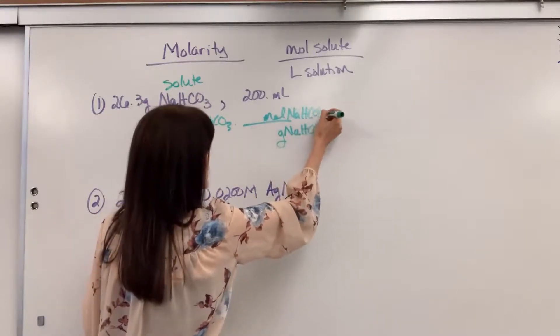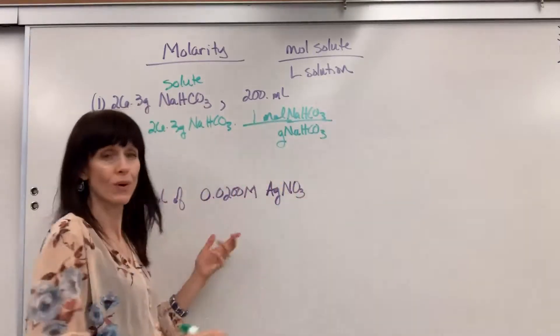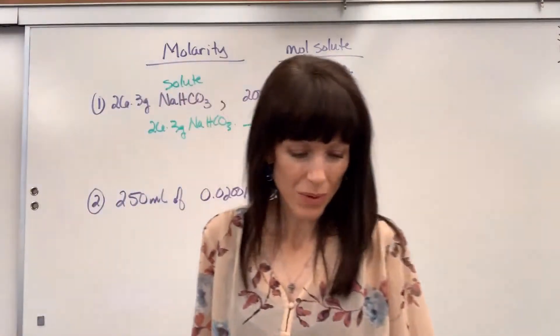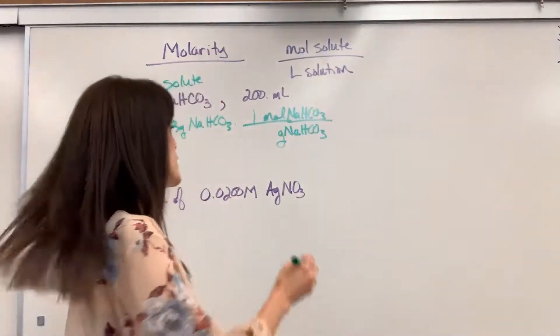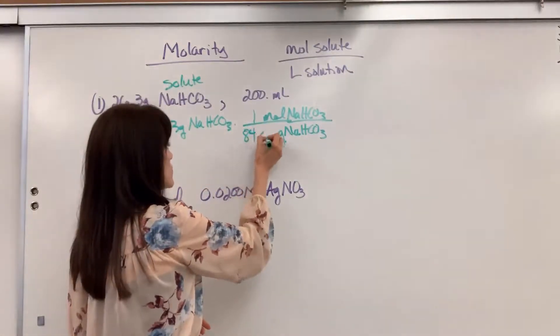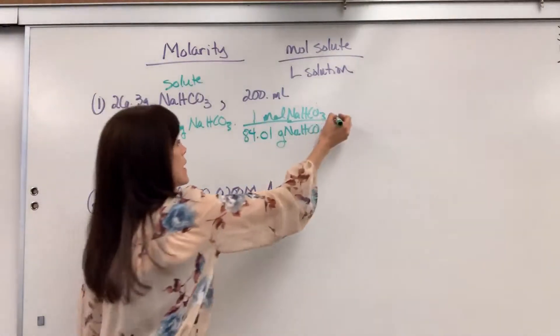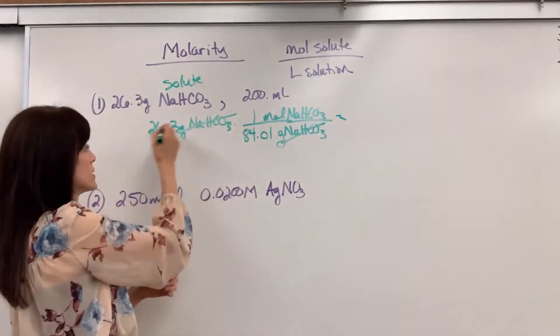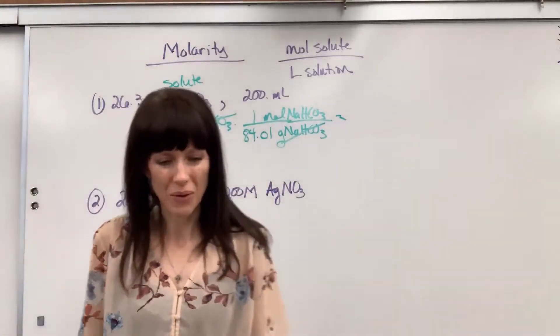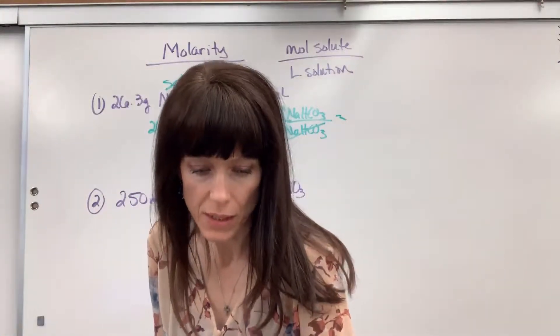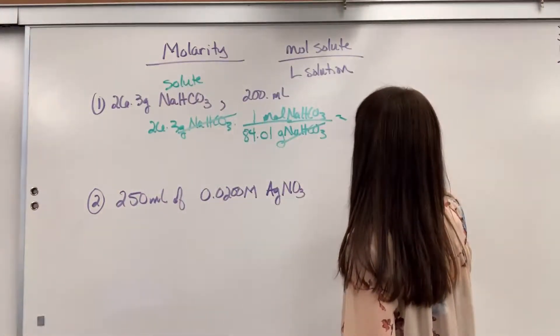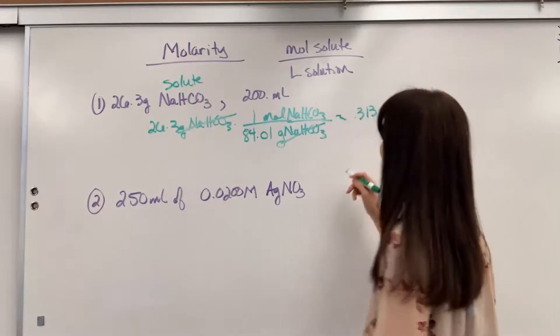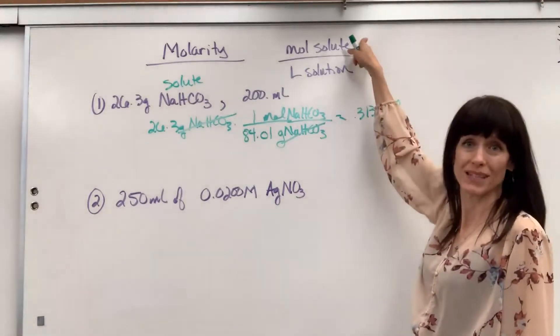Sodium hydrogen carbonate. So one mole and if we add up the molar mass for this, it is 84.01 grams. Okay, grams will cancel. 26.3 divided by 84.01 and we get 0.313 moles. Nice. There are my moles. That's what I need for moles.